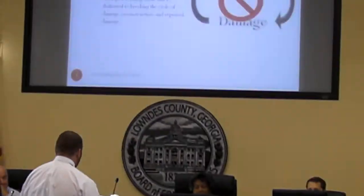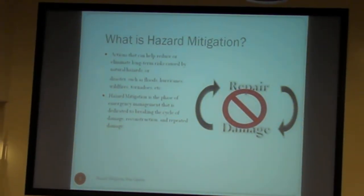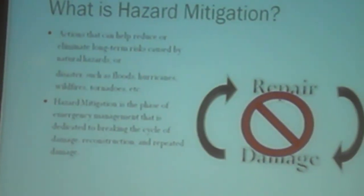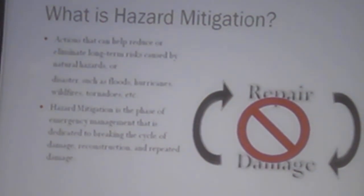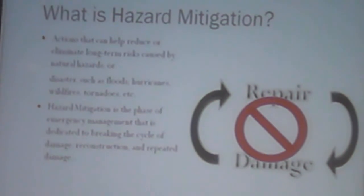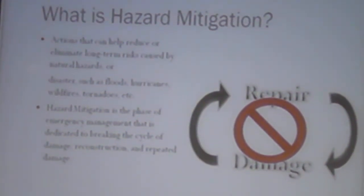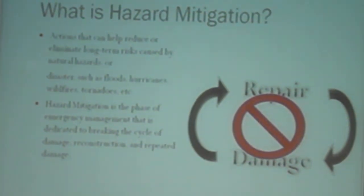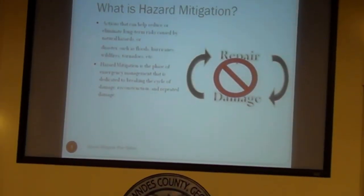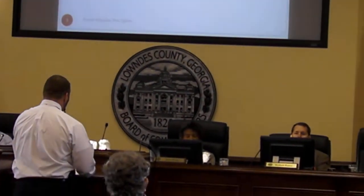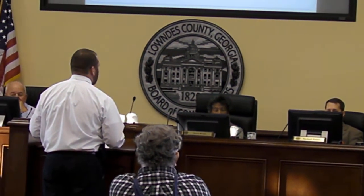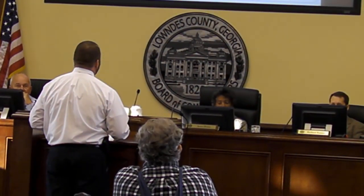Let me take a quick minute to explain exactly what hazard mitigation is. A lot of people misinterpret or misunderstand, getting us confused with our emergency operations plan. The emergency operations plan is how we respond during a disaster. Hazard mitigation really doesn't have a response component — it's separate. It's about what you do before the disaster happens and during the recovery phase. By definition, hazard mitigation is actions that can help reduce or eliminate long-term risk caused by natural hazards such as floods, hurricanes, wildfires, and other disasters.